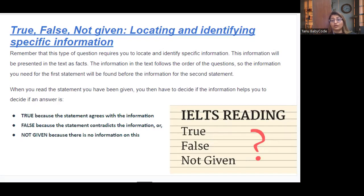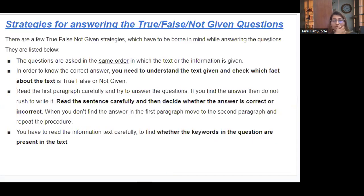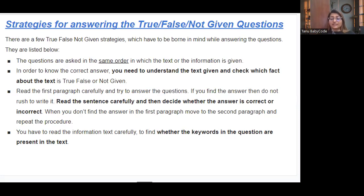Some strategies for True/False/Not Given questions to keep in mind: the questions are asked in the same order as the information is given. To find the correct answer, you need to understand the text and check which fact is true, false, or not given. Read the first paragraph carefully and try to answer the question. If you find the answer, do not rush — read the sentence carefully before deciding. If you don't find the answer in the first paragraph, move to the second and repeat.